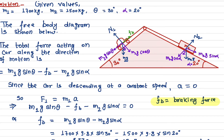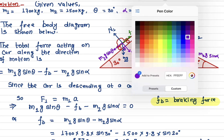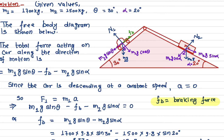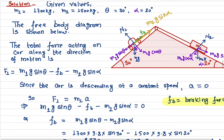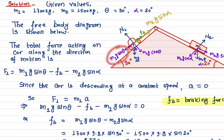The force from m2g sine alpha acts along the rope in the opposing direction. So the total force on the car is m1g sine theta minus the braking force Fb minus m2g sine alpha. The negative signs apply because these two forces are in the opposite direction to m1g sine theta.